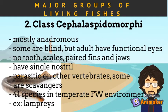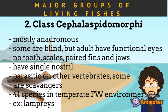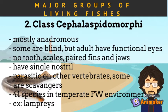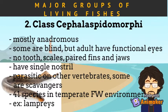Most species of this class are anadromous, migrating from marine to freshwater. Some are blind, but adults have functional eyes. They do not have teeth, scales, paired fins, and jaws. They only have one nostril, are parasitic on other vertebrates, and sometimes are scavengers. There are about 41 species in temperate freshwater environments. Examples are the living lampreys.